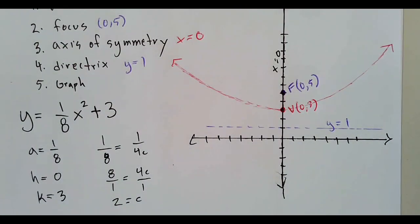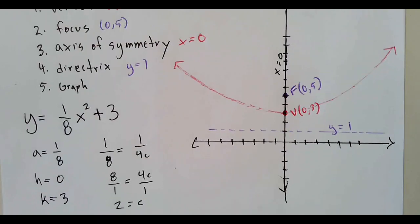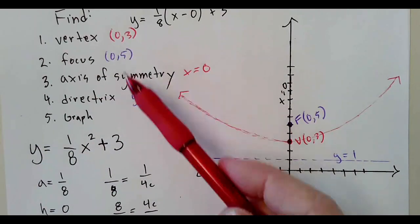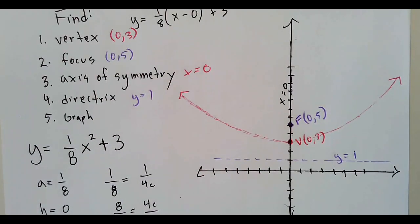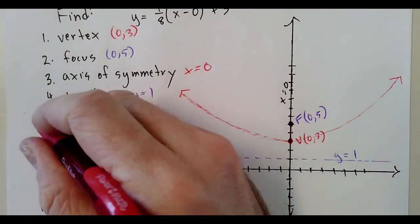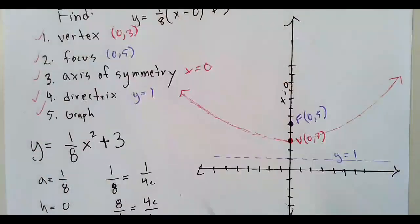And that's our graph. I've done all five things—I've identified the vertex, focus, axis of symmetry, directrix, and I have graphed it. So I am done.